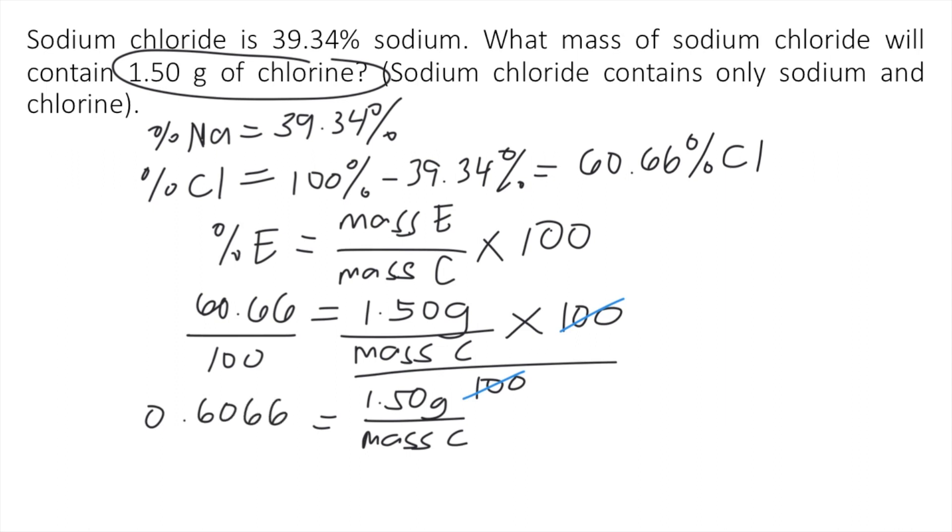Now, how do we get the mass of the compound? Okay, so let's continue our calculation here. You just simply rearrange the equation using basic algebra skills. Now, mass of the compound is just equal to 1.50 grams divided by 0.6066.